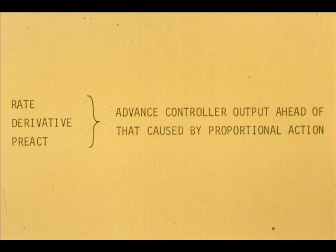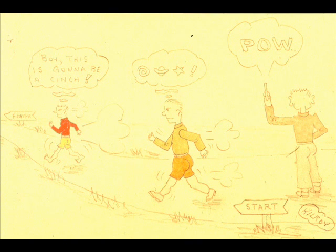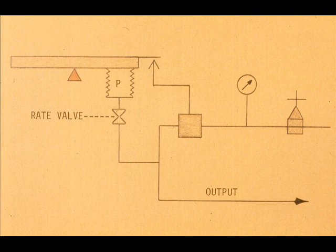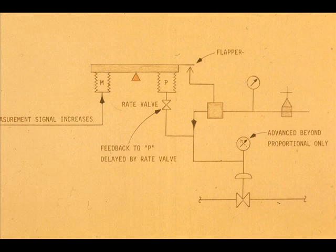These terms are synonymous. Rate, or derivative response, recognizes the speed at which the control point is leaving the set point. The reason being that the proportional output increases with distance from set point. Therefore, the rate valve is holding back an increasing amount of feedback to the proportional bellows. The output feedback into the proportional bellows is delayed, the nozzle stays nearer the flapper, and the output to the control valve is advanced.